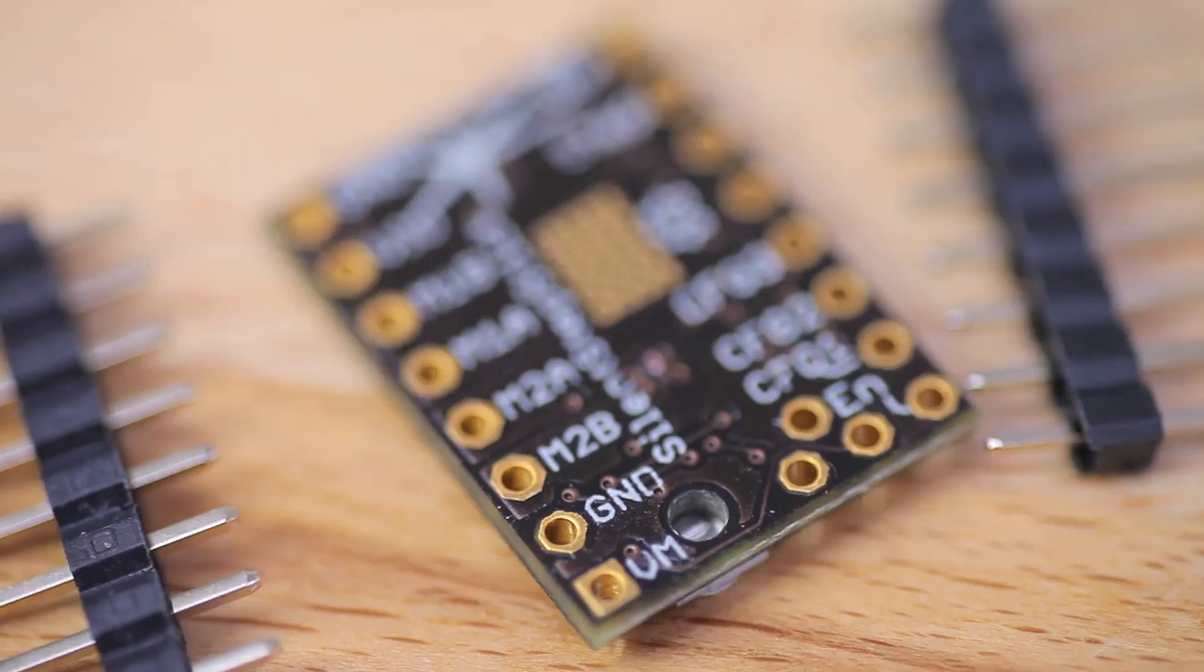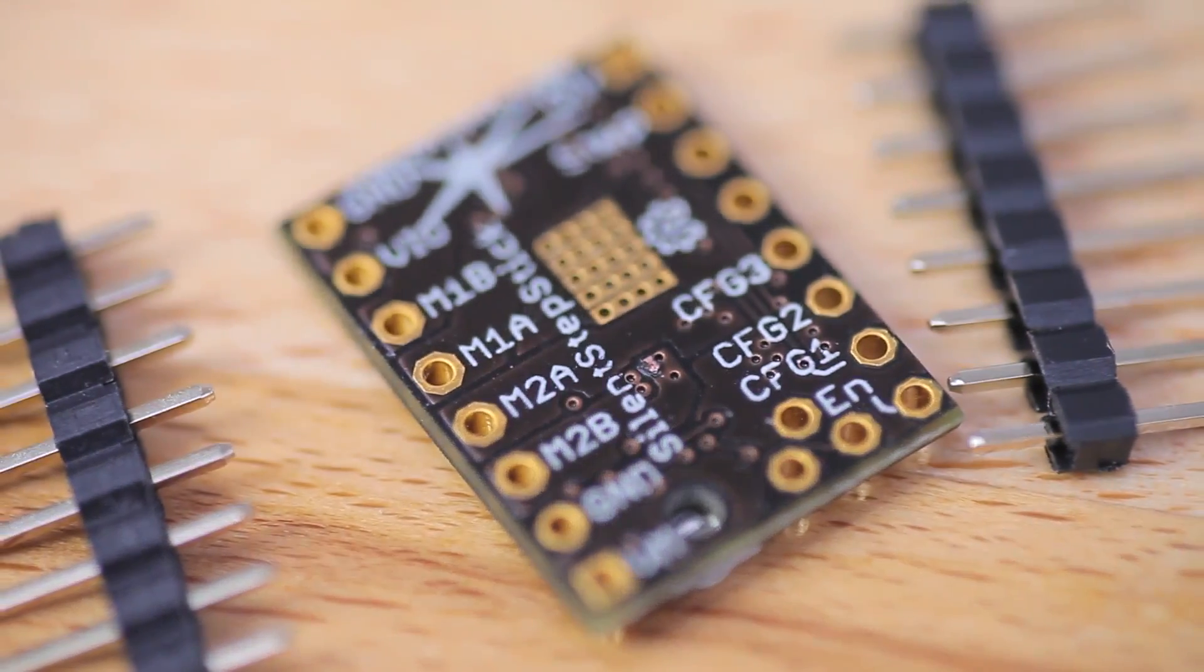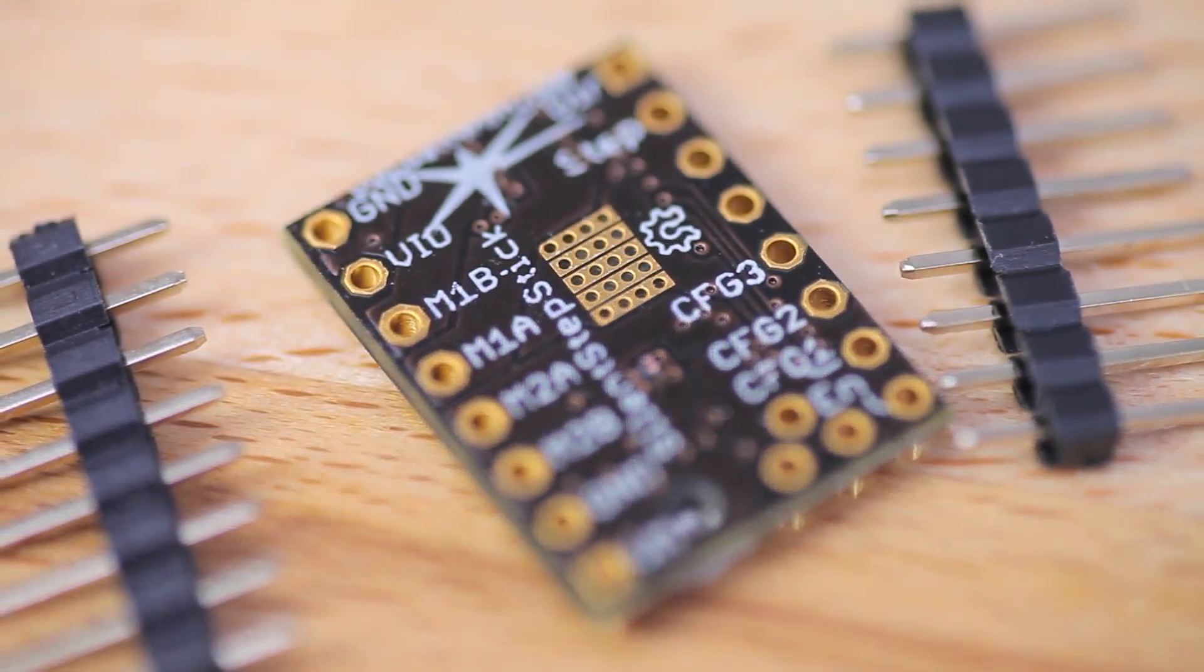That way, the heat is conducted away through the solder and the copper plating in these vias, which means that if you stick the same heatsink to the bottom here, the actual driver chip will stay much cooler than if you glue it to the top, which allows you to use higher currents before the chips overheat.